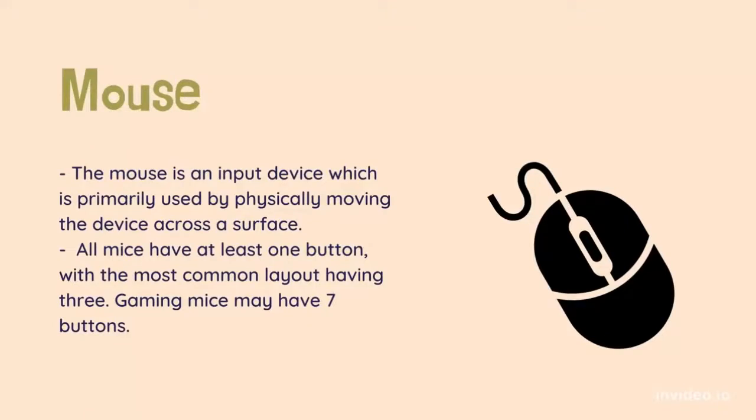The mouse is an input device which is primarily used by physically moving the device across a surface. This causes a pointer symbol, called a cursor, to move across the screen. The other input comes from pressing a button while the cursor is over an object on the monitor, or clicking. All mice have at least one button, with the most common layout having three.